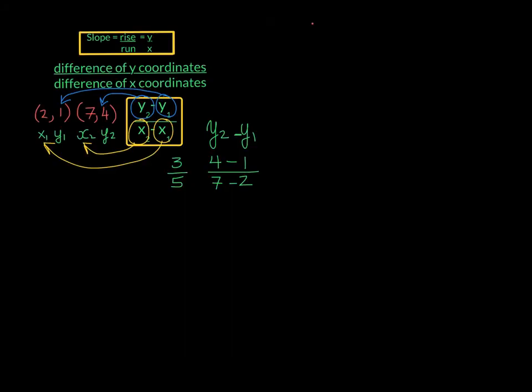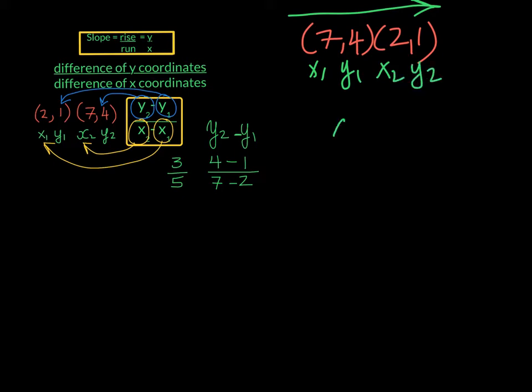This time we'll use (7, 4) as our first point, and (2, 1) as our second point. We will label them from left to right as we've done before. This will be x1, y1, x2, y2. Our equation is the same, and we will substitute the numbers where they need to go. Our y2 is 1, so I'm going to place it right here, and subtract from it my y1, which is 4.